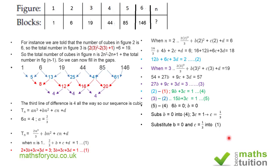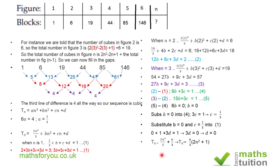To find d, substitute b = 0 and c = 1/3 into equation one: 0 + 1 + 3d = 1, so 3d = 0 and d = 0. Therefore, the total number of cubes in figure n is T(n) = (2/3)n³ + (1/3)n, which factorizes to T(n) = (n/3)(2n² + 1). That is the formula for this cubic sequence.